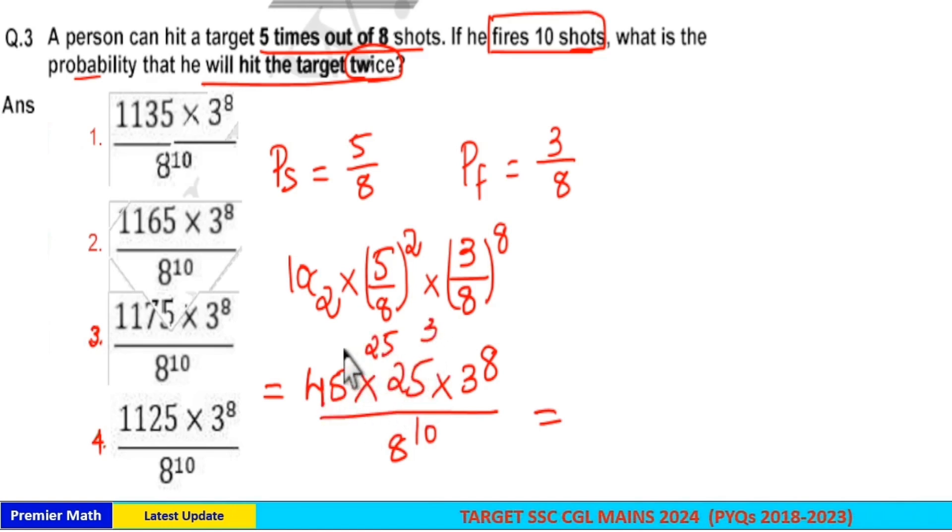4 into 2, 8, 8 plus 3, 11. So 45 into 25 is equal to 1125. Option 4 is your answer.